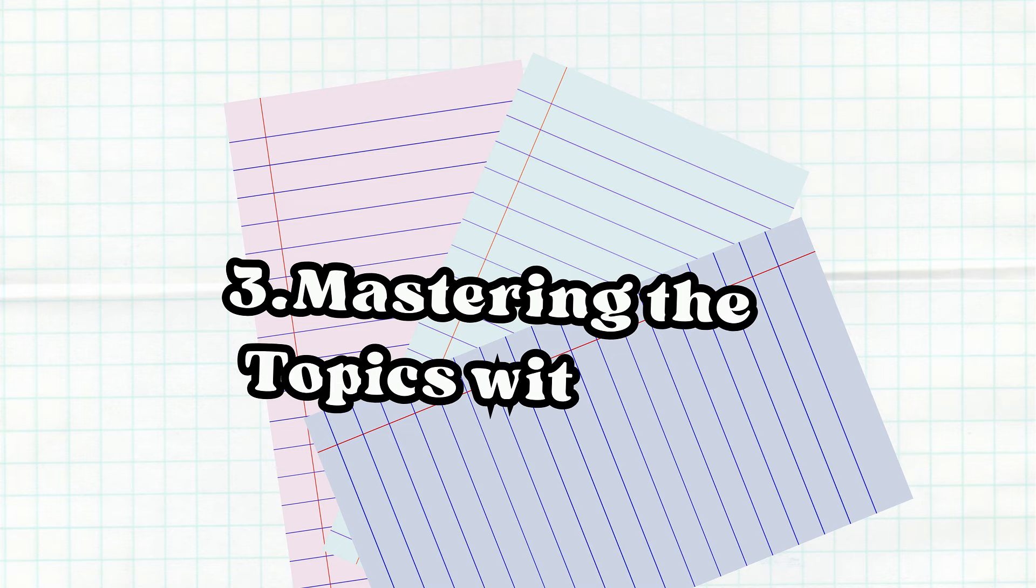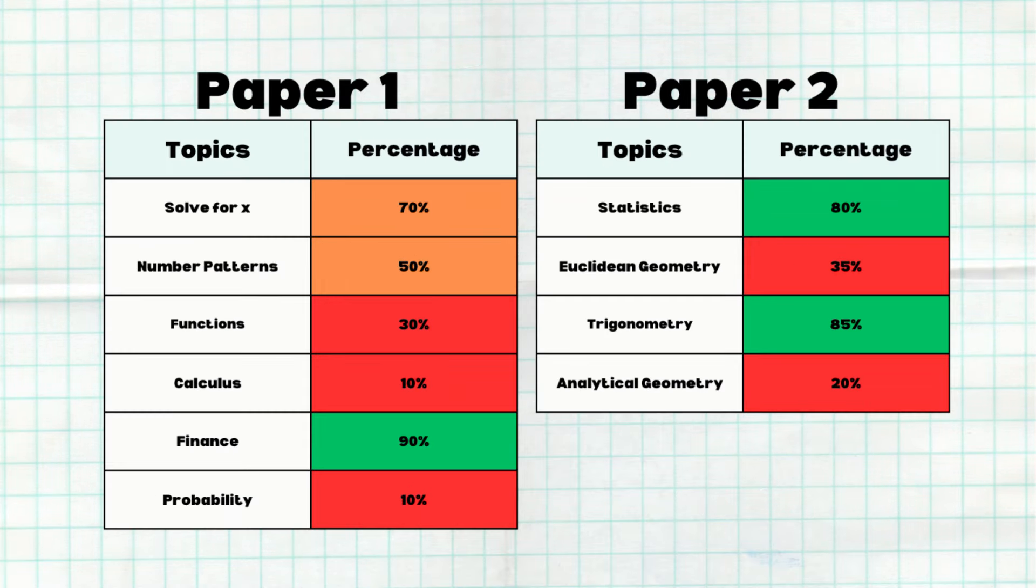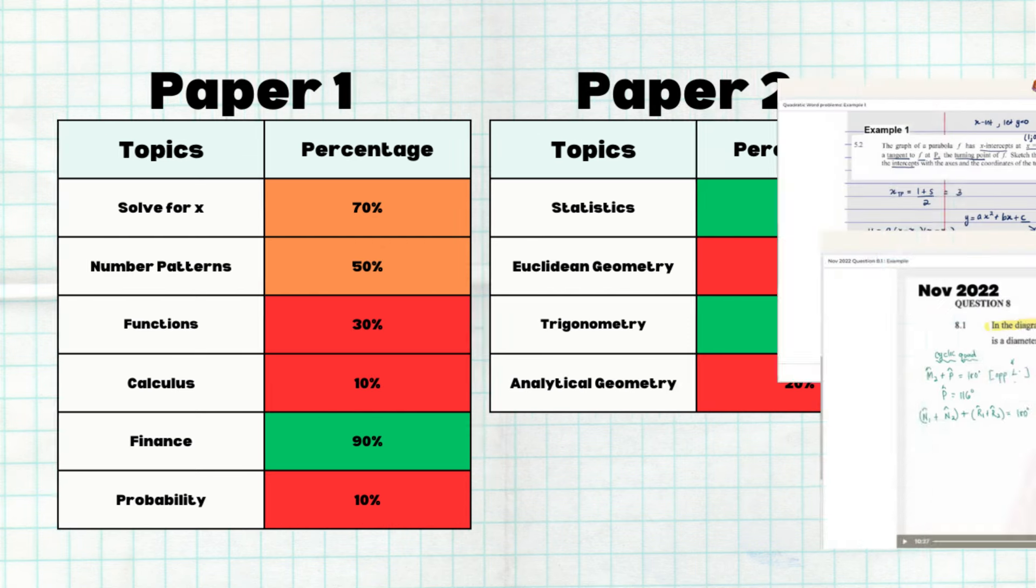Step 3: Mastering the topics with my courses. Once you've grouped your topics using the color method, the next step is mastering them. This is where my courses come in.